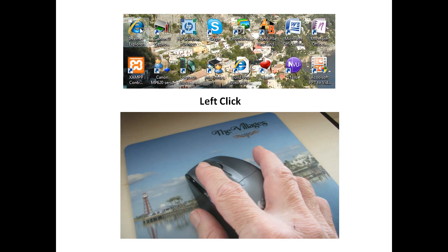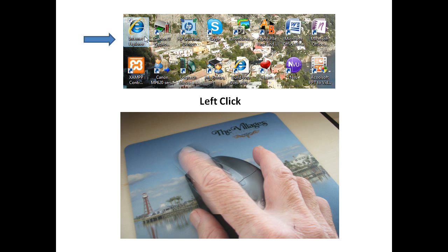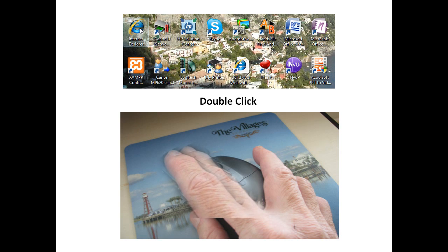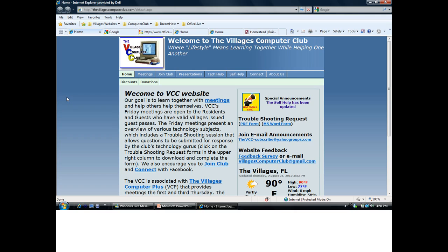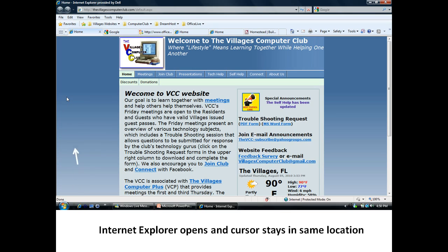Left click. You take your finger and you click on the left-hand side of your mouse. What happens is it highlights where the cursor is — you see Internet Explorer up there, which is a program that takes you to the Internet. It just highlights it, but if you want to open it, you have to double-click. You double-click much faster, and then automatically Internet Explorer opens up and the cursor stays in the same location.